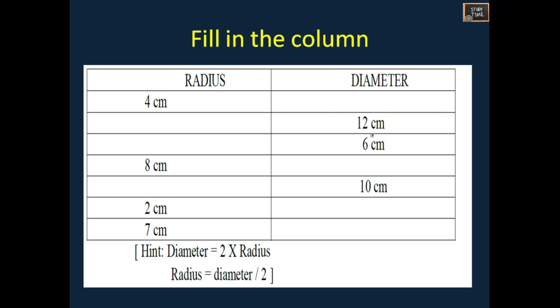Next, fill in the column. Radius and diameter is given. You are going to fill the column whichever is blank. Here hint is given: diameter and radius formula is given. You can use that and fill this. Your time starts now.